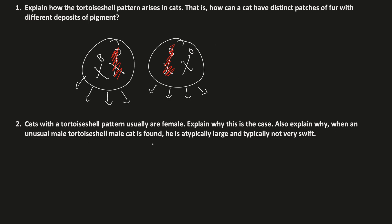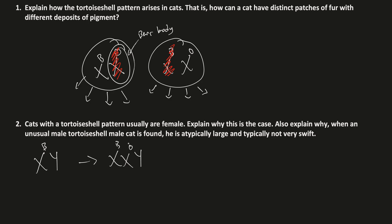An unusual male tortoiseshell cat is found — atypically large and typically not very swift. Males have an X and a Y chromosome, so normally they don't need dosage compensation and won't inactivate the X. However, one way to get X chromosome inactivation and create a Barr body — an inactivated X chromosome — in a male is by having multiple X chromosomes. When a male has XXY, with one X carrying black and one carrying orange, this is Klinefelter syndrome. This male cat is probably undergoing Klinefelter syndrome and must inactivate one X chromosome throughout his body.